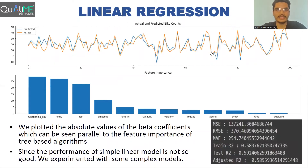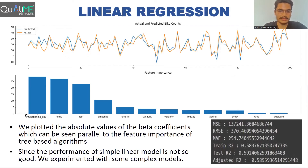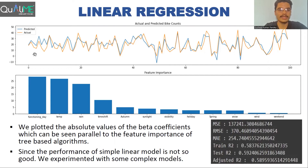First, we built a simple linear regression model to get an overall idea of how the data performs. We got approximately 60% R² score — 0.58 on the train set and 0.59 on the test set. The adjusted R² is 0.589. We also plotted the absolute values of the beta coefficients as feature importance: functioning day is the most influential feature, followed by temperature, then rainfall. The actual versus predicted bike count plot shows the orange line for actual and the blue line for predicted.